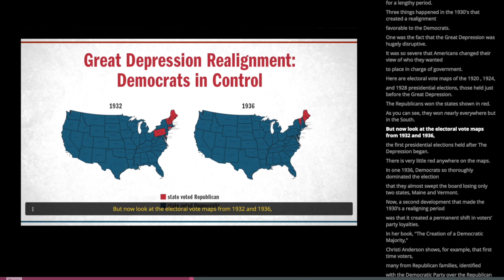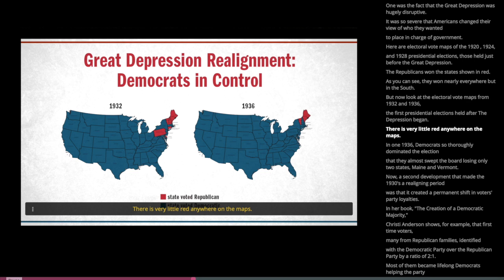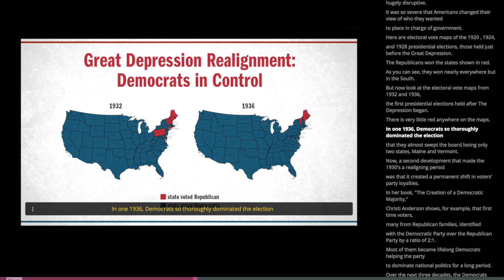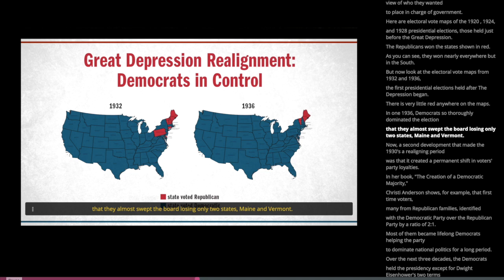Now look at the electoral vote maps from 1932 and 1936, the first presidential elections held after the Depression began. There is very little red anywhere on the maps. In 1936, Democrats so thoroughly dominated the election that they almost swept the board, losing only two states: Maine and Vermont.